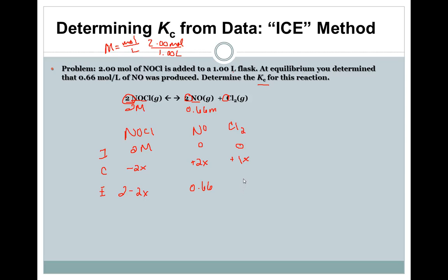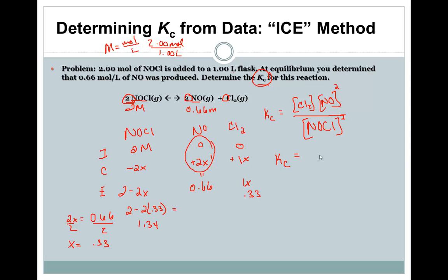NOCl is 1.34, we're going to square that one. NO is 0.66 and that's squared as well. Cl2 is 0.33. This comes out to be 0.33 times 0.4356 divided by 1.7956. These are not correct significant figures at this point, we'll fix that at the end.